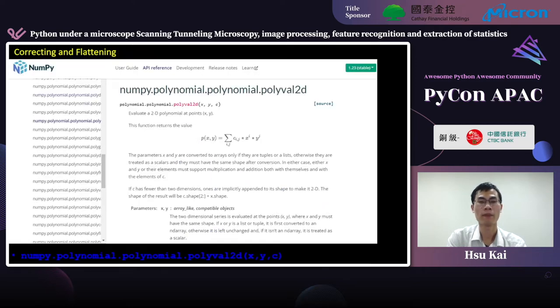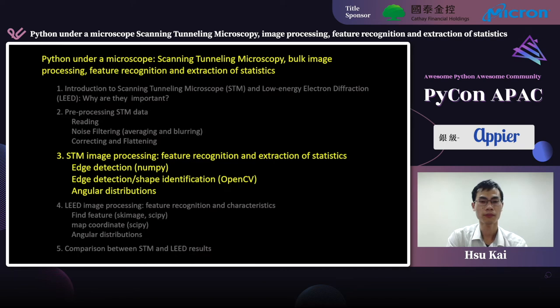The final STM artifact I'm going to talk about is the flatness issue. First, when we mount the sample on the sample plate, it is not possible to manually mount the sample flat on the nanoscale. And secondly, when scanning large distances using tube scanners, the scan plane often follows a curved surface. So, it is often necessary to flatten the data with second-order or even high-order polynomial fitting. And here, NumPy polynomial gives us such function. We can evaluate a 2D polynomial at our data points.